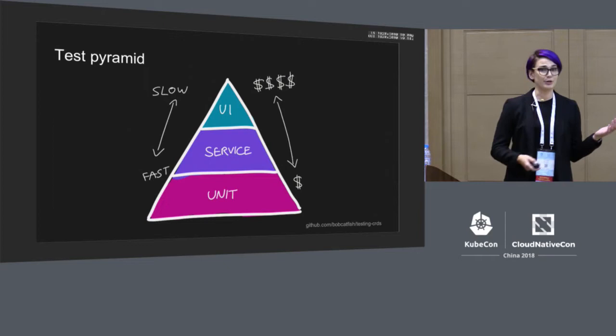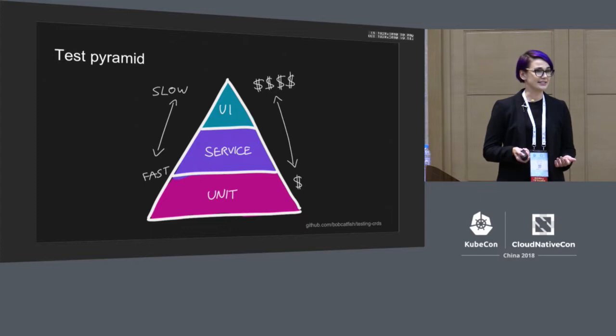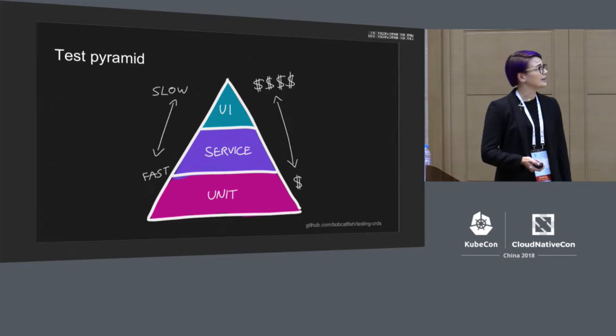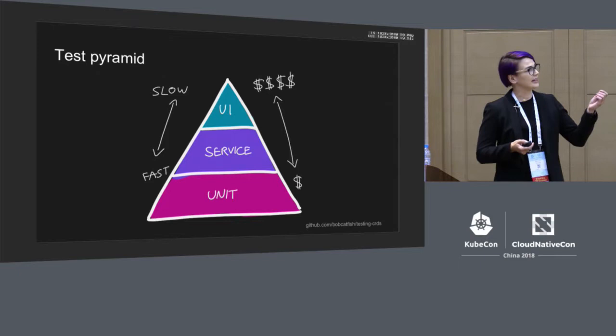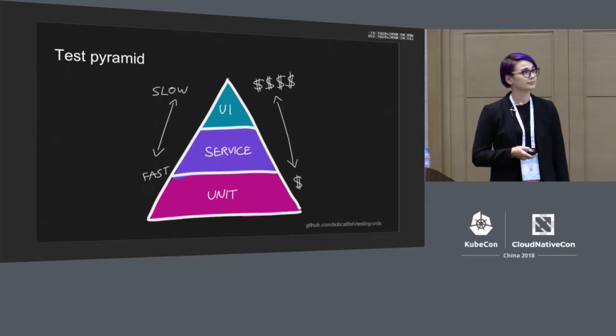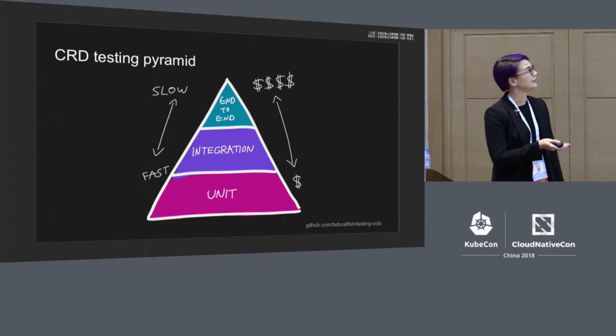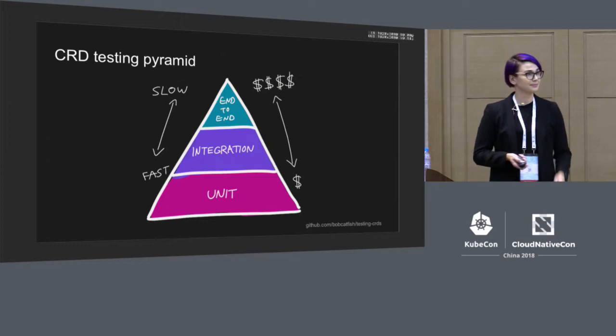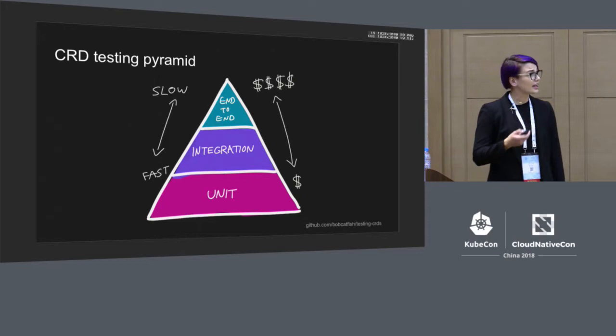You may have seen this pyramid before — this is the classic testing pyramid. It tells us the kinds of tests we should be writing and how many of each type. We start with unit tests, which are our cheapest and fastest tests, and we write mostly unit tests, with fewer of the other kinds, which as we move up the pyramid become slower and more expensive. For CRDs specifically, we're going to use slightly different terms, and in this talk we'll go through each type and discuss how to write it, what Go libraries to use, and what tricks are available.